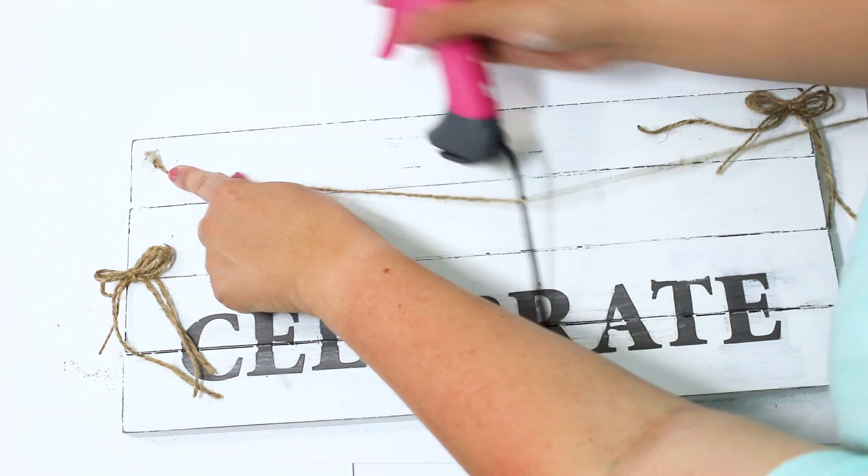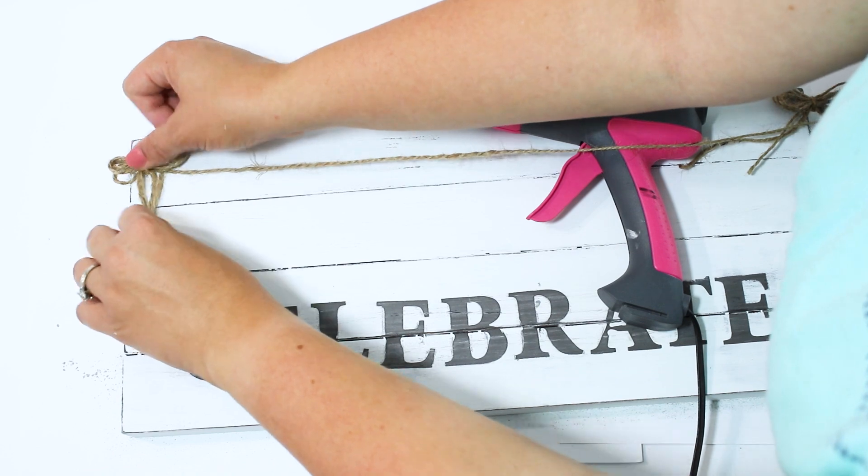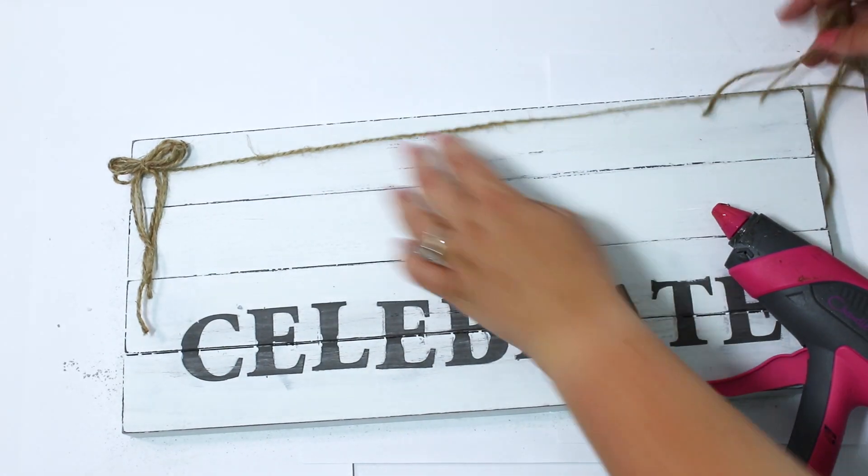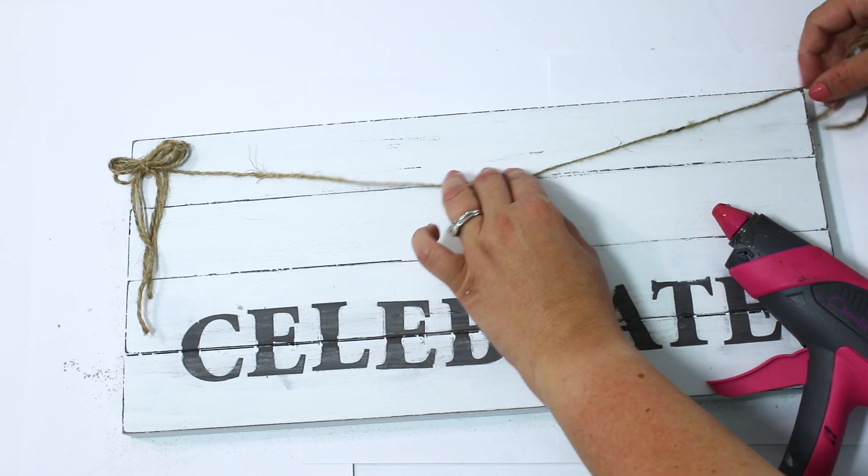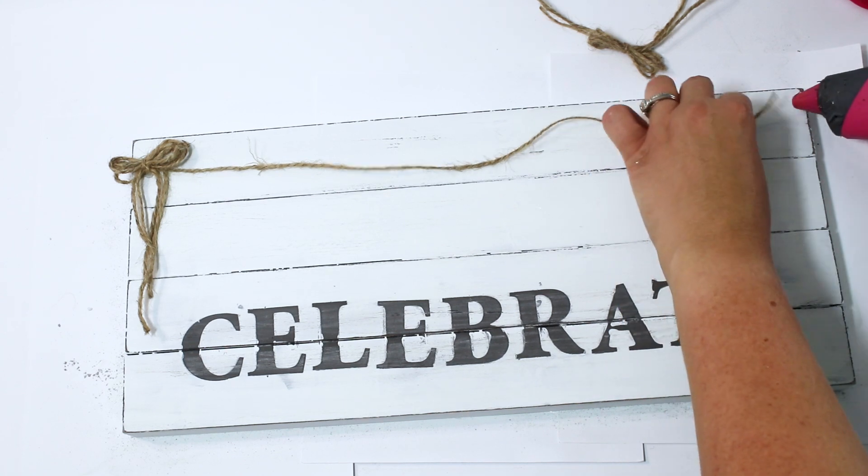Next, I wanted it to appear as if this jute string was connected by these bows at each end so I just put a dab of hot glue and laid the string down with a bow on top of it and I did put a little bit of slack in it to make sure it did look like the stars were hanging down like a banner.